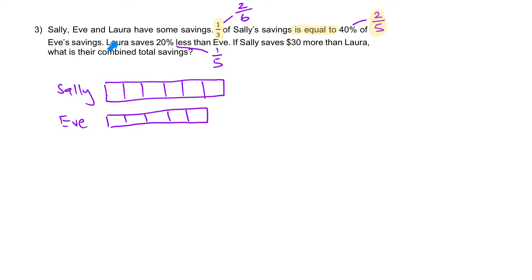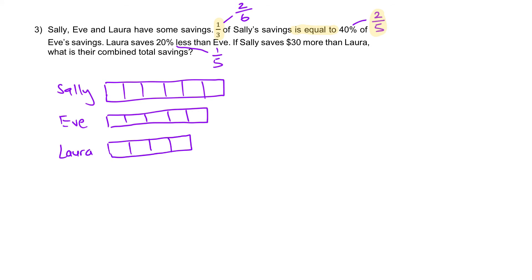Moving on to Laura. Laura saves 1 fifth less than Eve. Which means if Eve has 5 out of 5, and Laura saves 1 fifth lesser, Laura would be 4 out of 5. In this case, Eve does have 5 units and Laura saves 1 fifth lesser, so Laura will be 4 units. Moving on — if Sally saves $30 more than Laura, we're going to compare Sally and Laura. The difference of 2 units must be equal to $30.